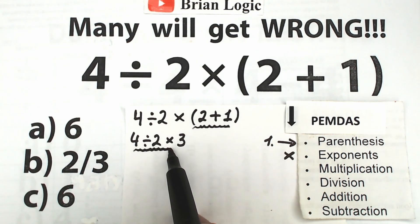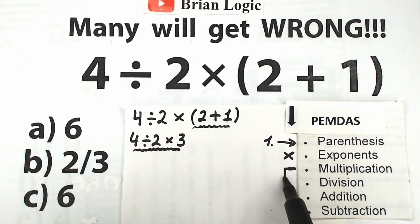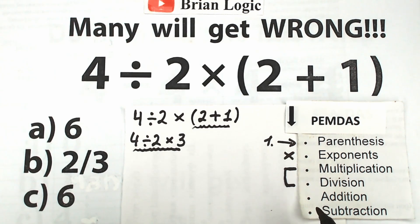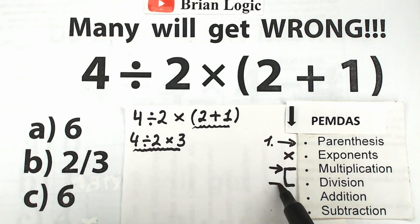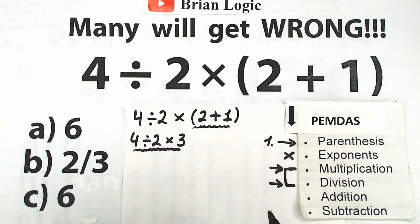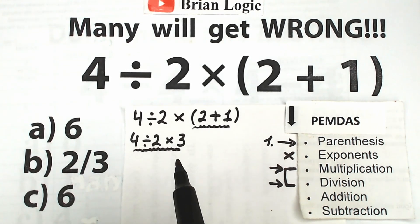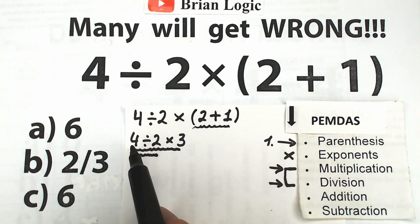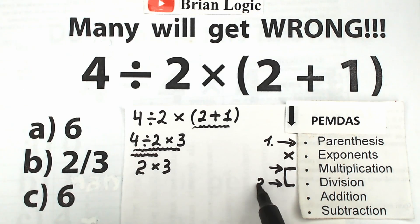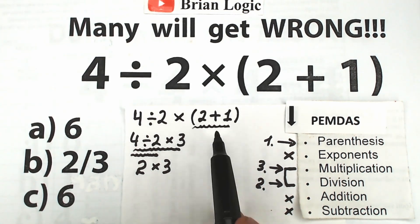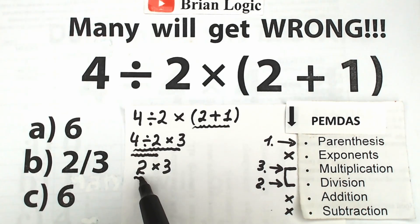Next is the multiplication and division group. We have division here and multiplication here. Multiplication and division have the same priority, so we find the first sign from left to right. A lot of students say we should multiply 2 times 3 first — that's not correct. Scanning left to right, the first sign is division, so we divide 4 by 2, which gives us 2, and we still have multiplication by 3. So 2 times 3 equals 6.